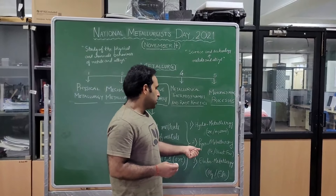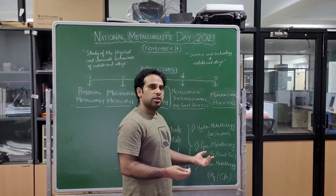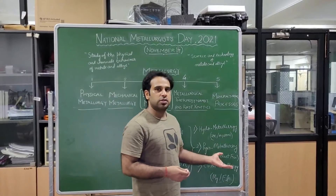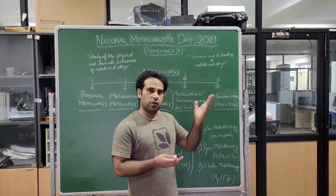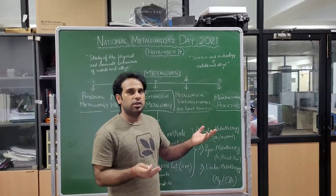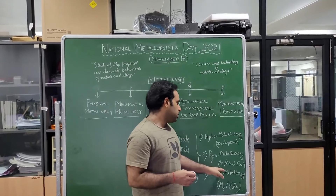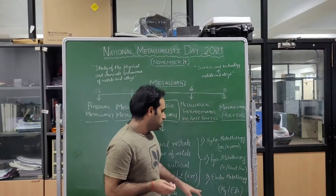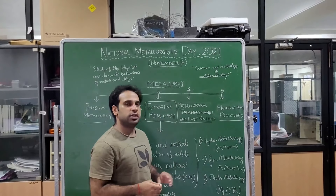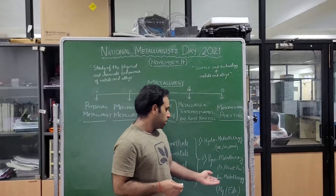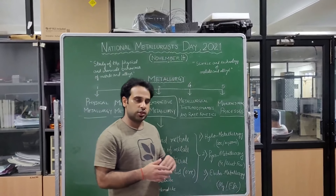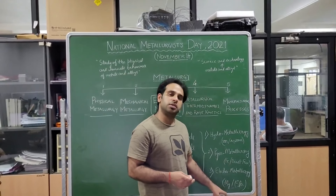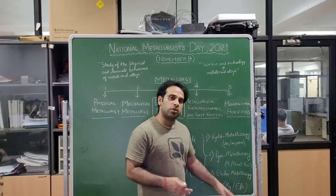The second extractive metallurgy technique is pyrometallurgy, where we extract the metal using a blast furnace or elevated temperature to separate the metal from the ore. For example, iron is separated from the blast furnace at elevated temperature. The third technique is electrometallurgy, where we separate or extract the metal through the electrolysis process. For example, magnesium is separated during the electrolysis process.